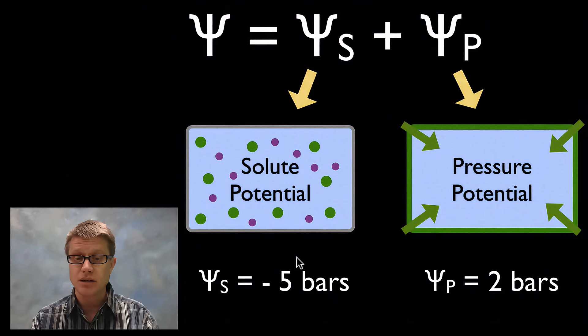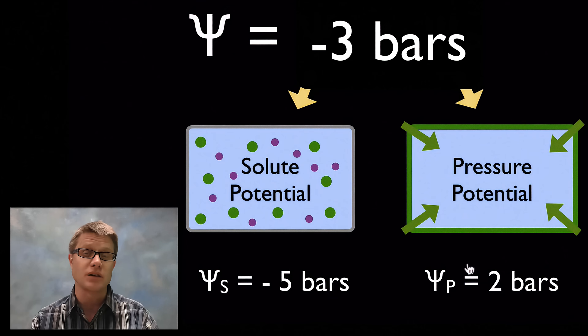Those two things, if we add those together, is going to be our water potential. What would be the water potential in this case? It would be negative five bars plus two bars, so it's going to be negative three bars. That's the overall water potential, and those two things are going to determine if water flows into a cell or if it doesn't.